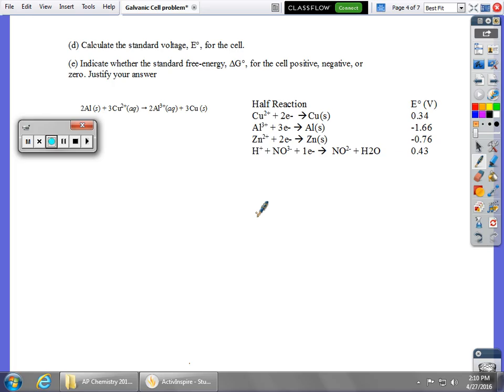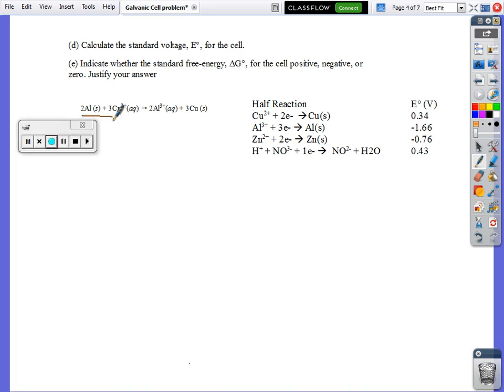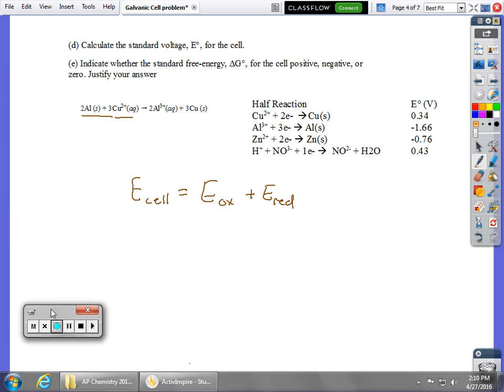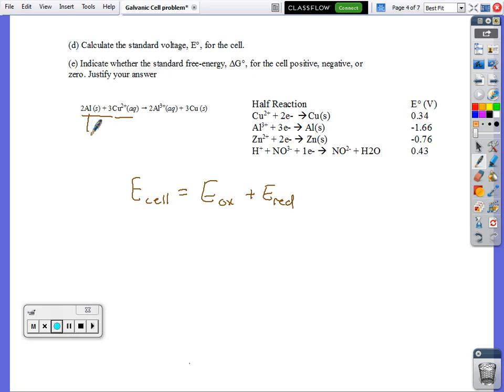To do this, we're adding together the potential for one half cell, the aluminum, and the other half cell, the copper. To get the overall E for my cell, I add E for oxidation plus E for reduction. Now, you're only ever given reduction potentials, so whatever one is being oxidized, we've got to flip around. Looking at our overall equation,